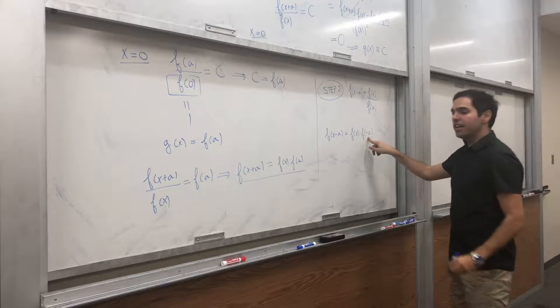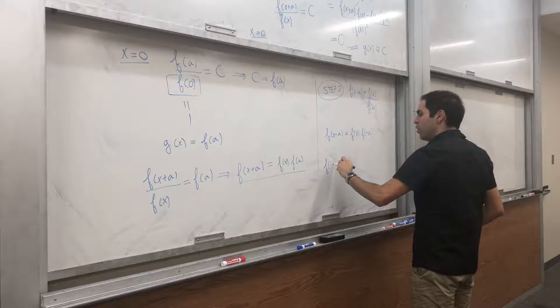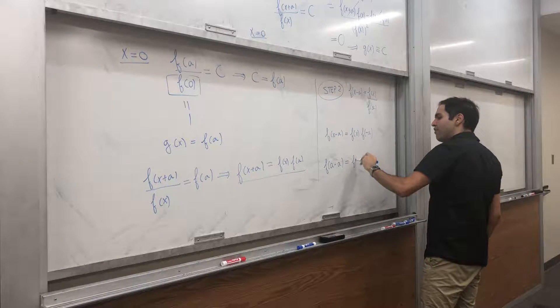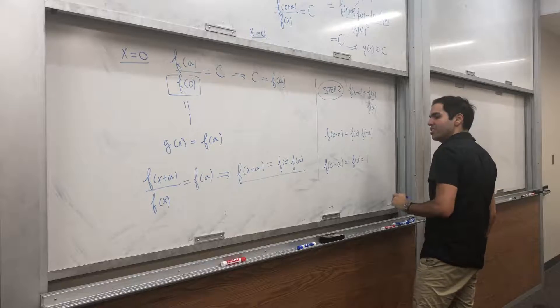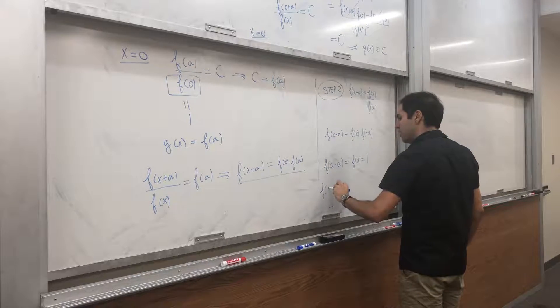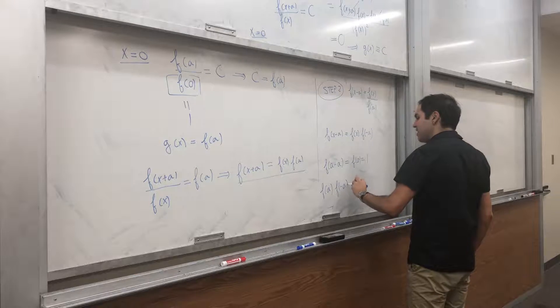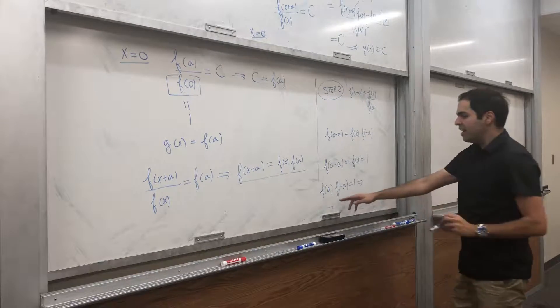Now, let's try to calculate f of minus a. And notice the following, f of a minus a, that's f of zero, and by definition, that's one. And so, f of a times f of minus a, that equals to one. And again,